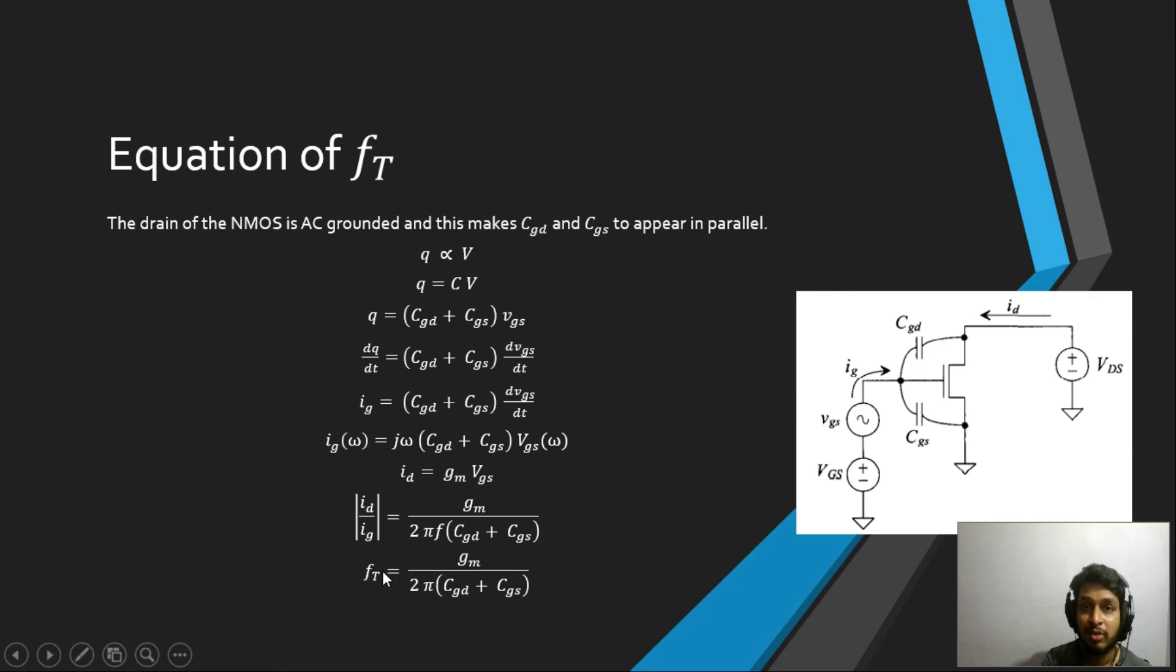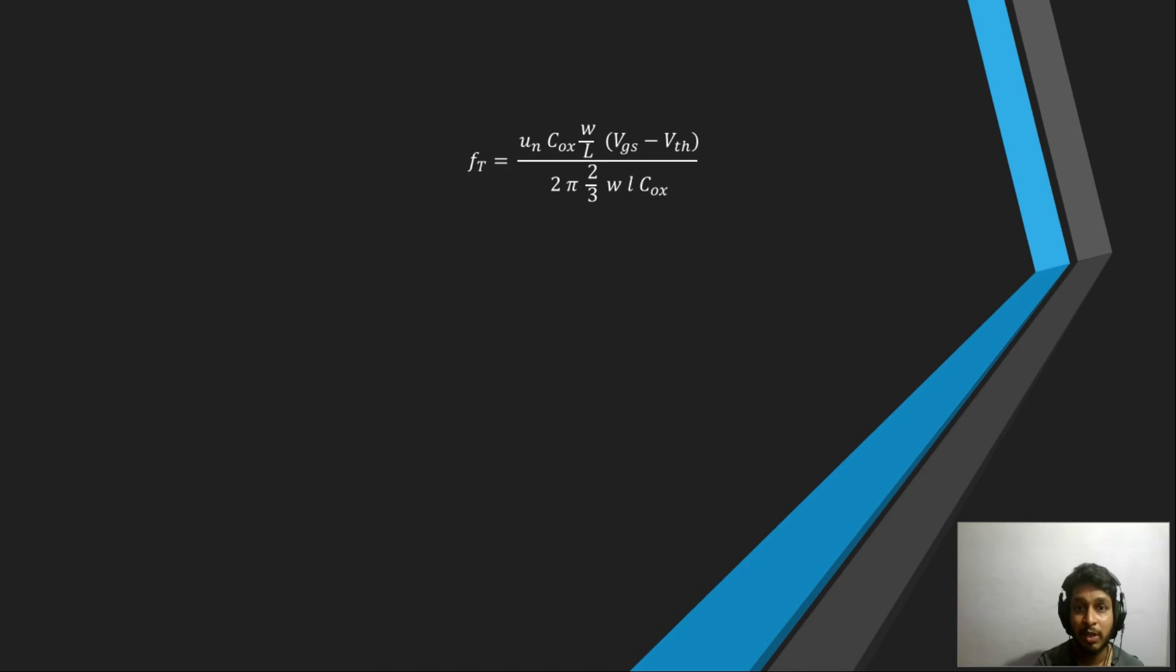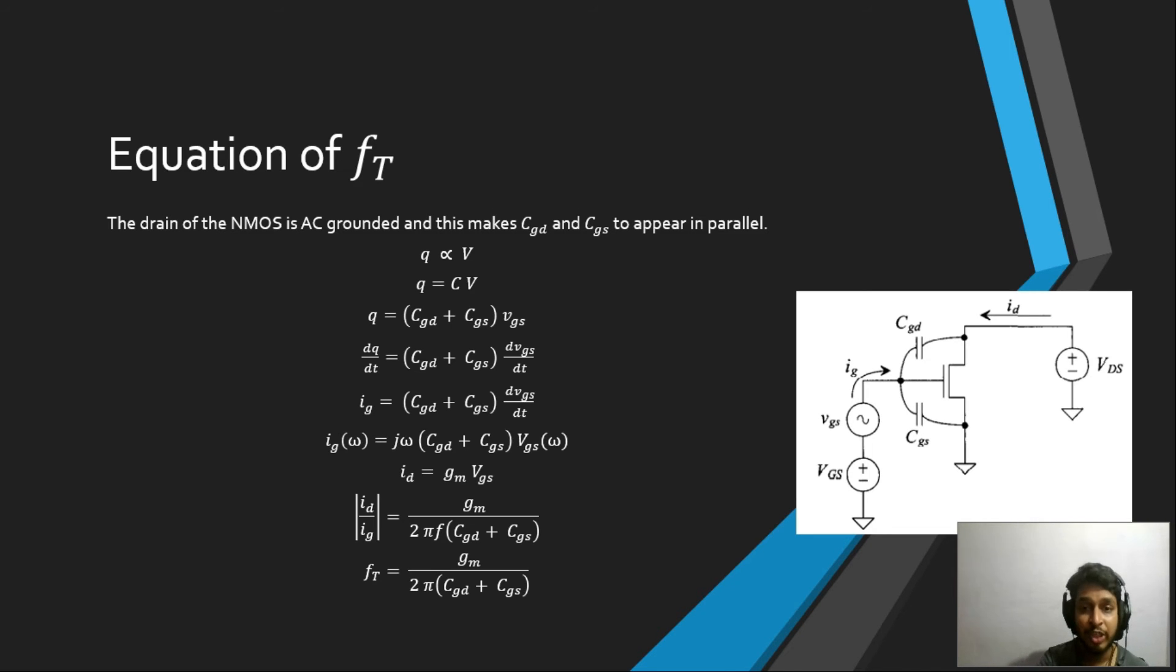Now when the F we are showing here becomes fT, it is when this ID divided by IG, the magnitude of this becomes 1. So if we replace this value as 1, then you will get the equation of the transition frequency or transit frequency, whatever you call it: gm divided by 2 pi times CGD plus CGS. Now we will try to further simplify this. If you see this equation, the fT—now what we will do here is we will replace the gm by mu and Cox W by L, VGS minus VTH. That is the equation of gm. And now also we can consider that CGD is pretty much smaller than CGS.